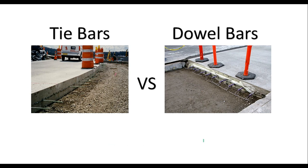This shows the difference between a tie bar and a dowel bar. If this is the direction of movement of traffic, then tie bars are used for joining the slabs in the longitudinal direction, whereas dowel bars are used in the transverse direction to transfer the wheel load from one slab to another slab.